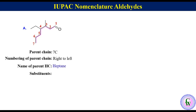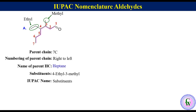There are two substituents: an ethyl at C4 and a methyl at C3, so they will be written as 4-ethyl-3-methyl. As we know, the IUPAC name consists of substituents + name of parent hydrocarbon without 'e' + 'al'. Putting all this information in order gives the IUPAC name of this molecule as 4-ethyl-3-methylheptanal.